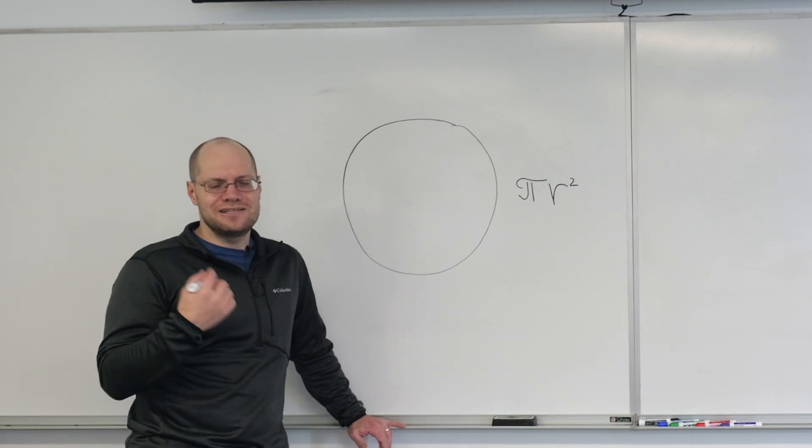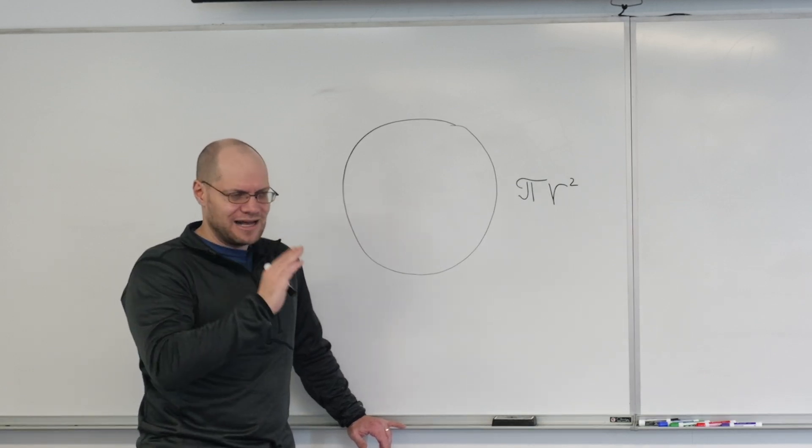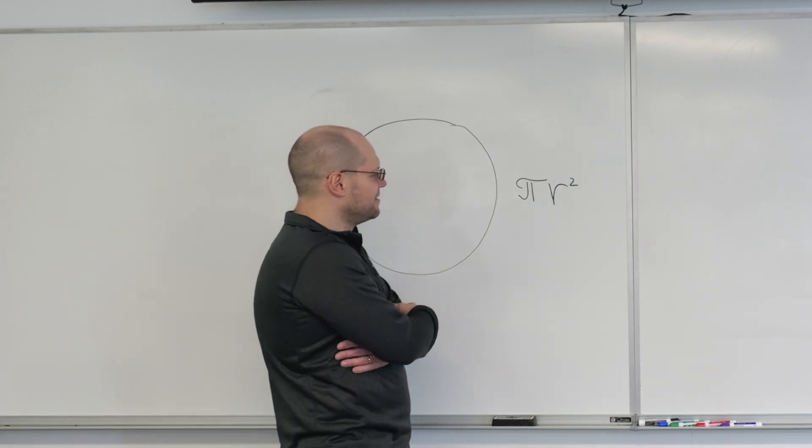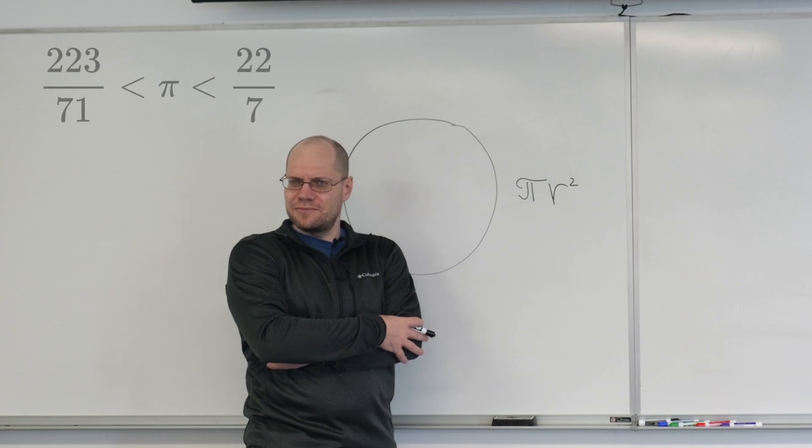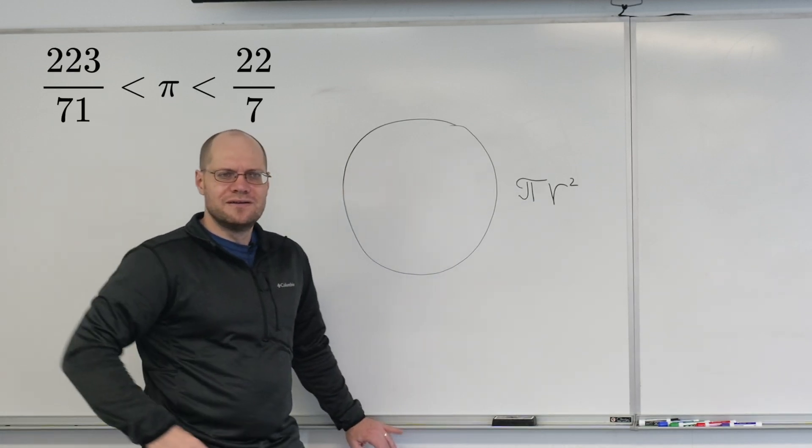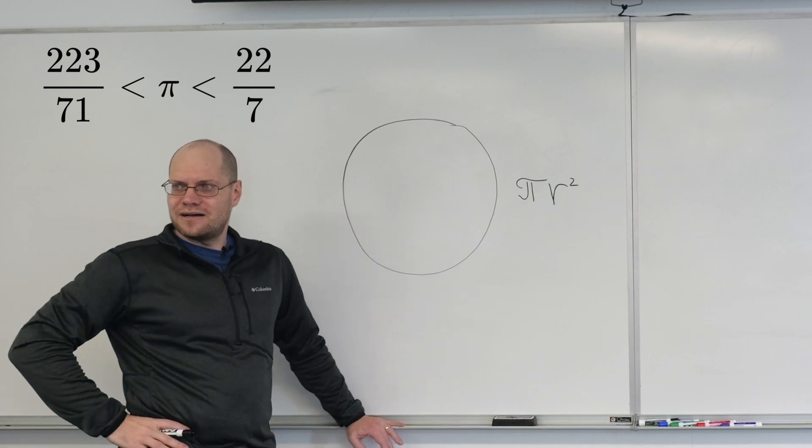And then, of course, Archimedes—you can look at his calculation, I'll just leave it behind the scenes, beyond the scope here—had a much better estimate, 220-something over 71 or something like that. Just more digits, just incredible.